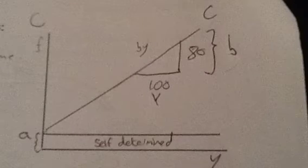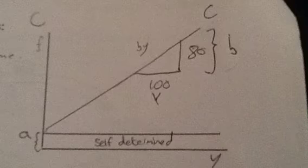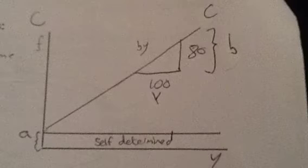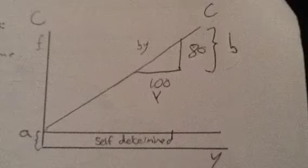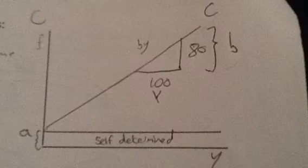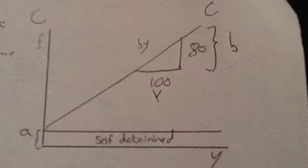If you're asked to draw a graph on this, you draw consumption on the Y axis and income on the X axis. The big line going up shows us induced consumption.